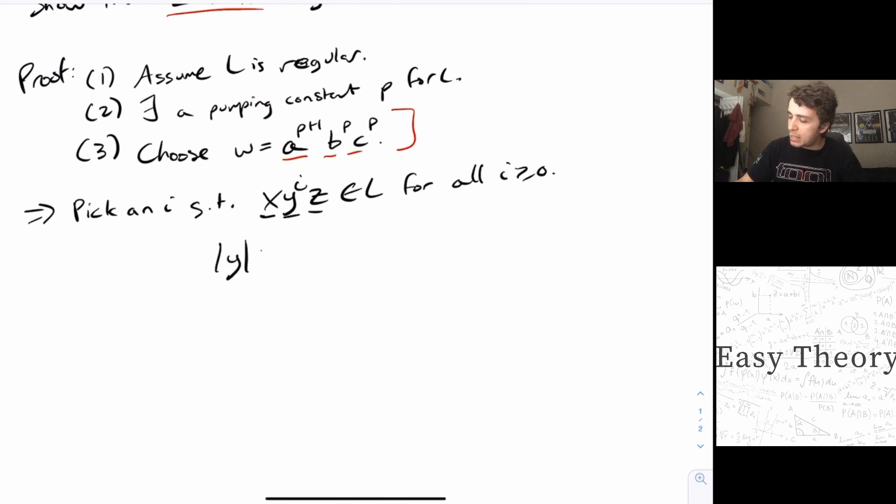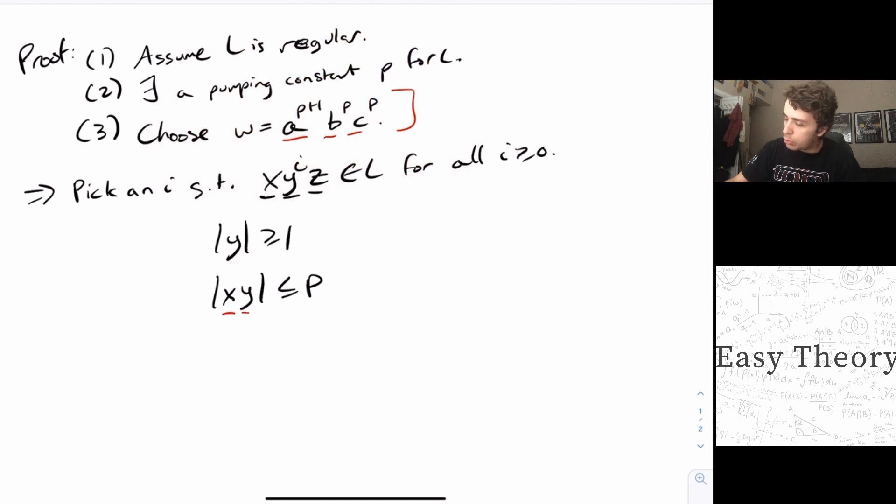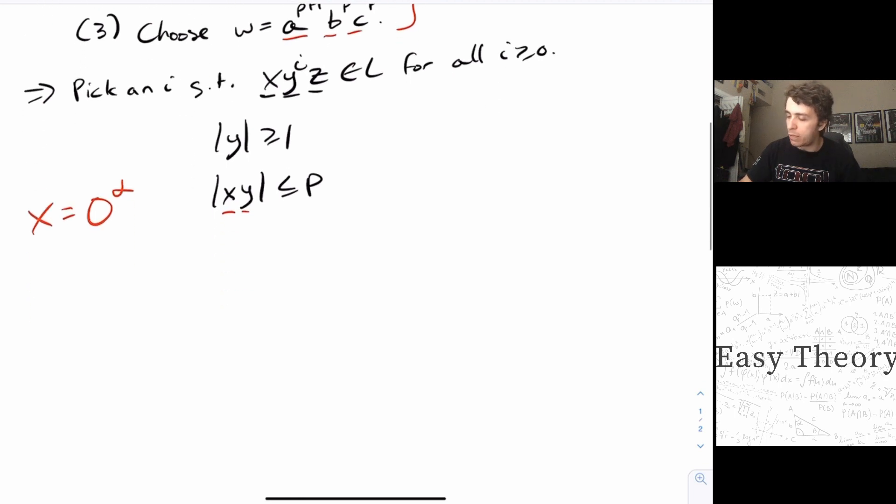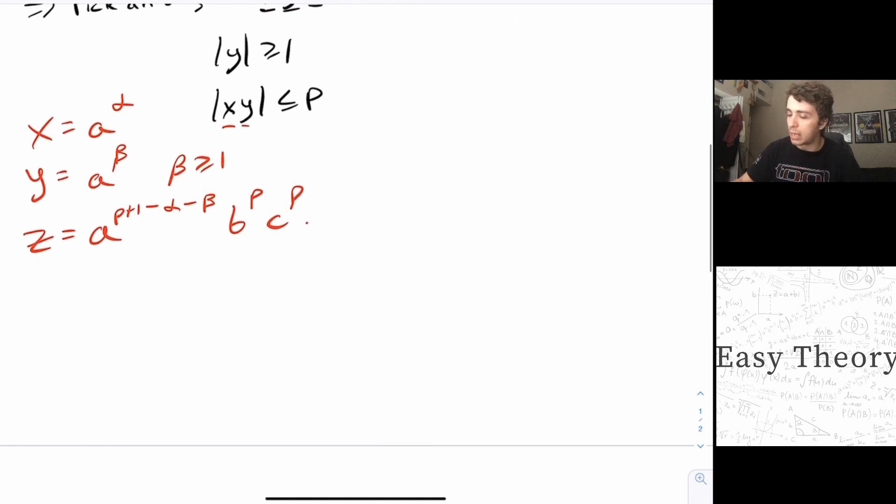Well, we know that the length of y is at least one, and the length of x, y is at most P. So that tells us that the x and the y part, those are within the A's right here, because the first P characters are A's, well, P plus one. And at most, the first P characters involve the x and the y part. So that tells us that x is some number of A's, let's call it alpha, some number of A's. Y is some number, A's not zeros. So it's A to the alpha, A to the, let's just call the number of A's in Y beta. And we know that beta is at least one, because the number of Y's is at least one. So then the rest of the string is, well, we started off with P plus one A's, then the x part took away alpha, the y part took away beta, and then we have B to the P, C to the P, because the x and the y part didn't touch those two parts.